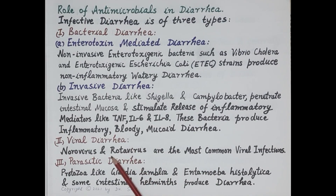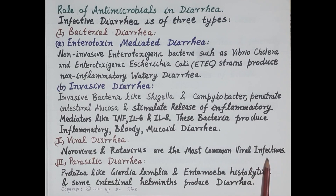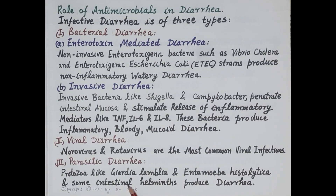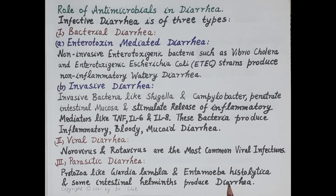The next type is viral diarrhea. Norovirus and rotavirus are the most common viral infections which produce diarrhea. Then, for parasitic diarrhea, protozoa like Giardia lamblia and Entamoeba histolytica are intestinal parasites that produce parasitic diarrhea.